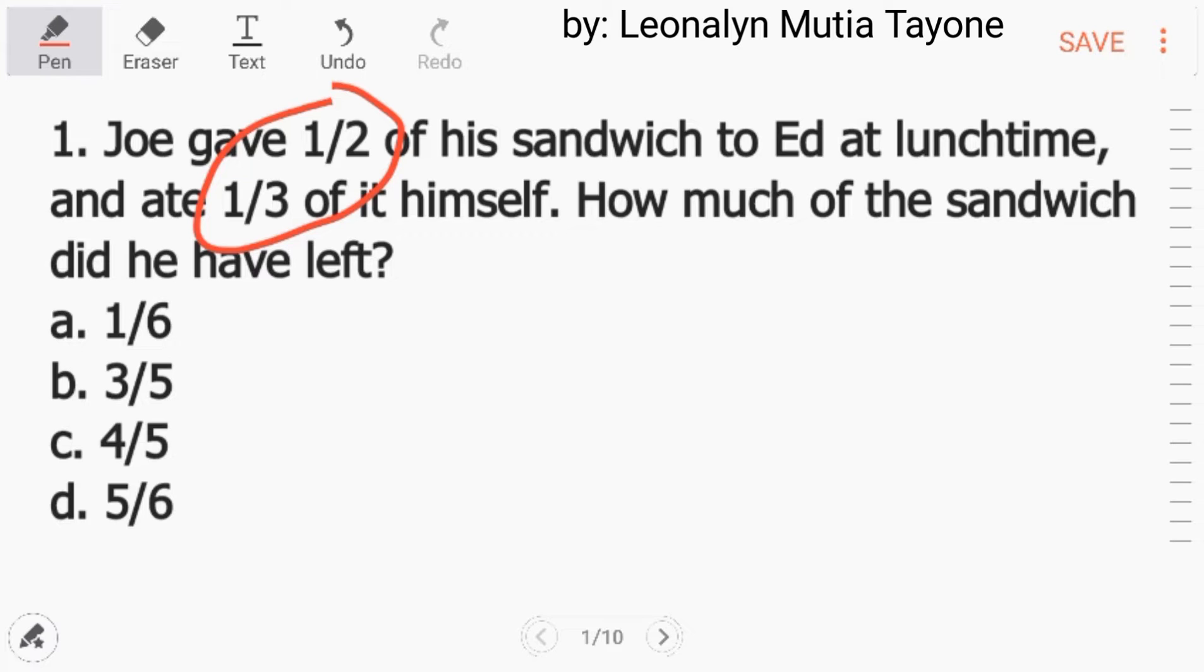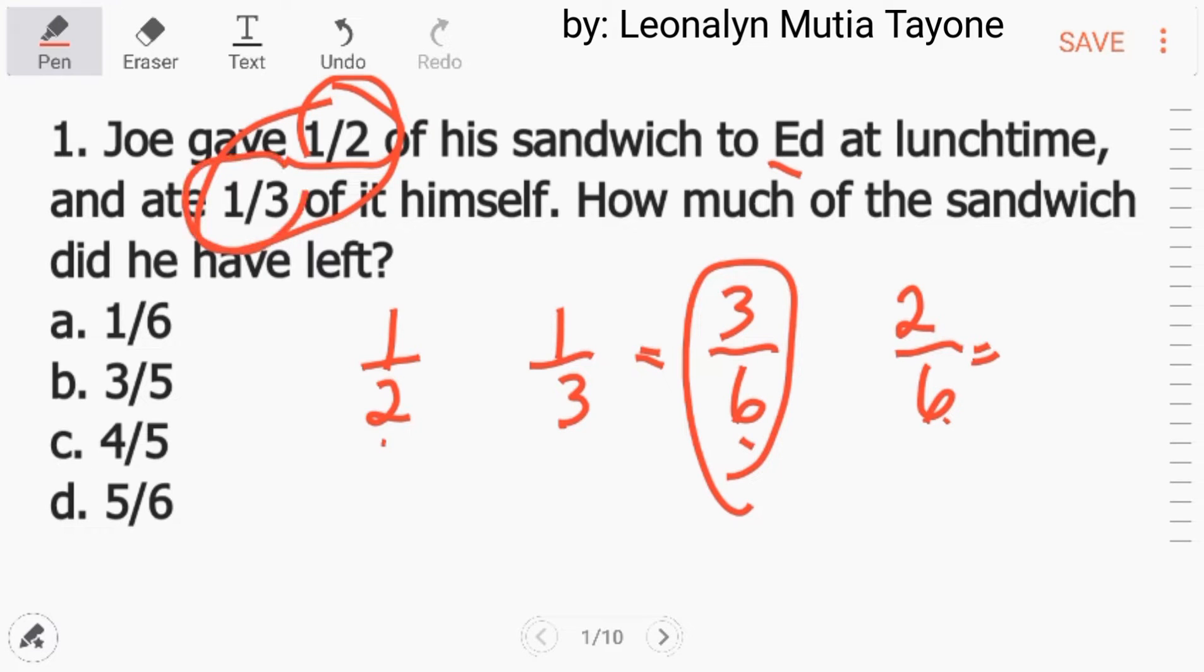First, i-add natin and then let's find the least common denominator nitong dalawa, one-half at saka si one-third. Ang least common denominator nila ay 6. So, 6 divided by 2 equals 3, 3 times 1 equals 3. Tapos, yung isa, 6 divided by 3 equals 2, 2 times 1 equals 2. Ngayon, ito yung binigay niya kay Ed, yung one-half. Ito yung equivalent ng one-half. Next, ito yung one-third na kinain niya. One-third sa whole mismo. Hindi yun siya one-third na one-third sa half niya. So, one-third sa buong sandwich. I-add natin yan.